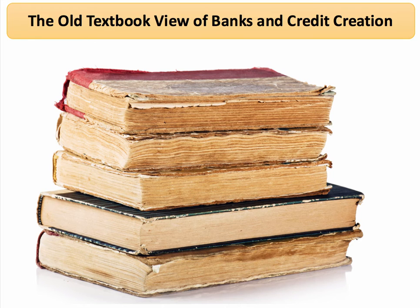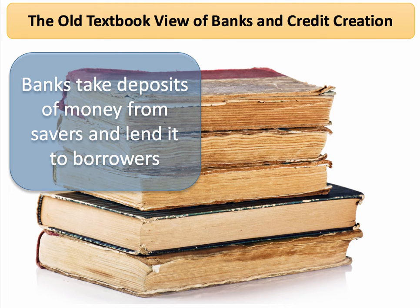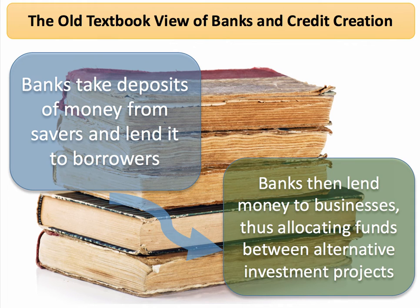The textbook view is that banks are pathetically dependent on savers for money. They have to rely, first of all, on attracting deposits of cash from a household saver or small business. And once that money is safely deposited in the bank, the commercial bank can then choose to keep a proportion in cash and then lend it out to somebody who needs the money. The argument is that banks receive the deposits and then lend it out to businesses, thereby allocating money between alternative investment projects.